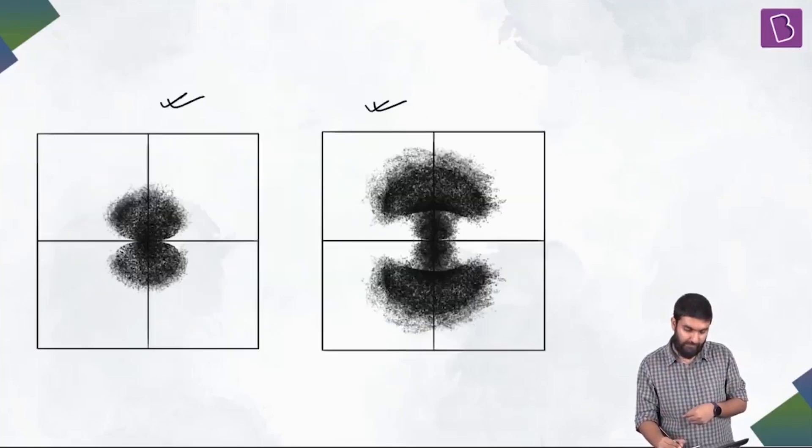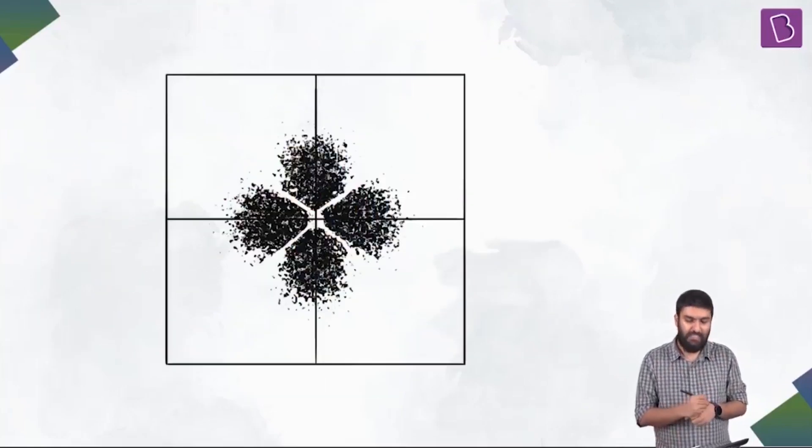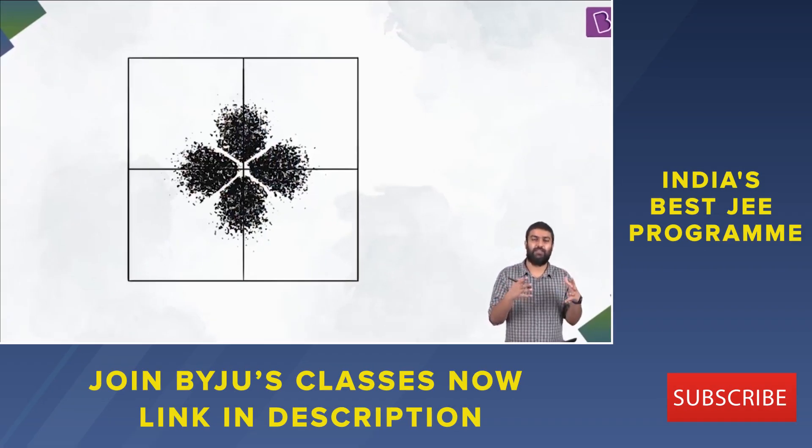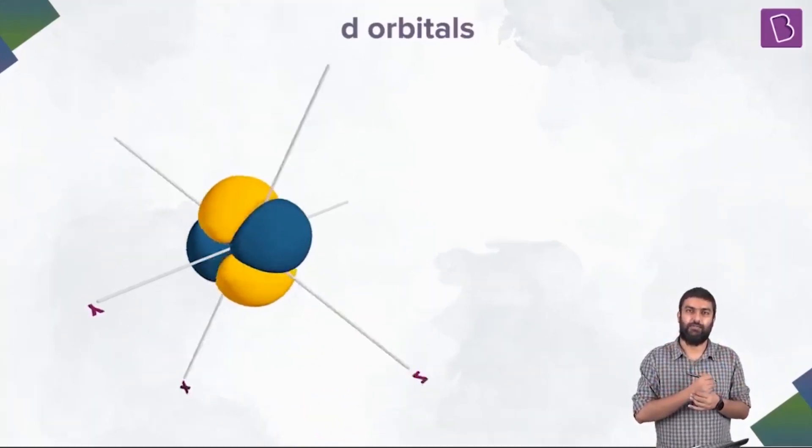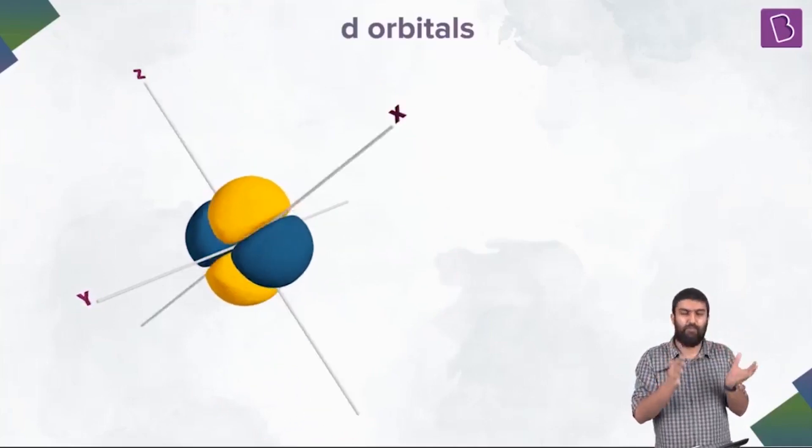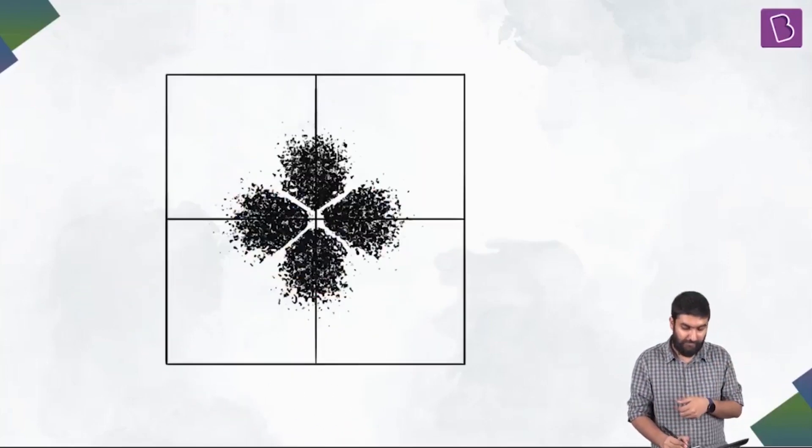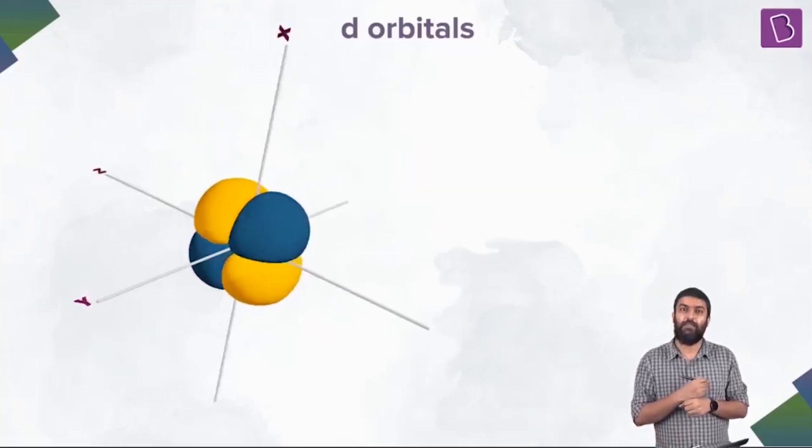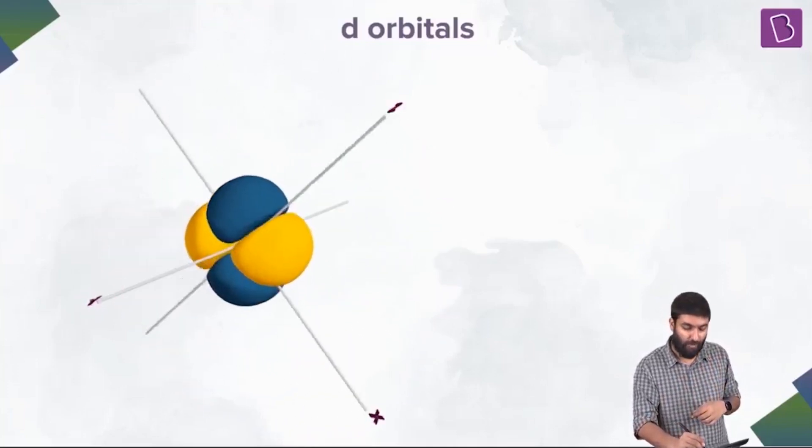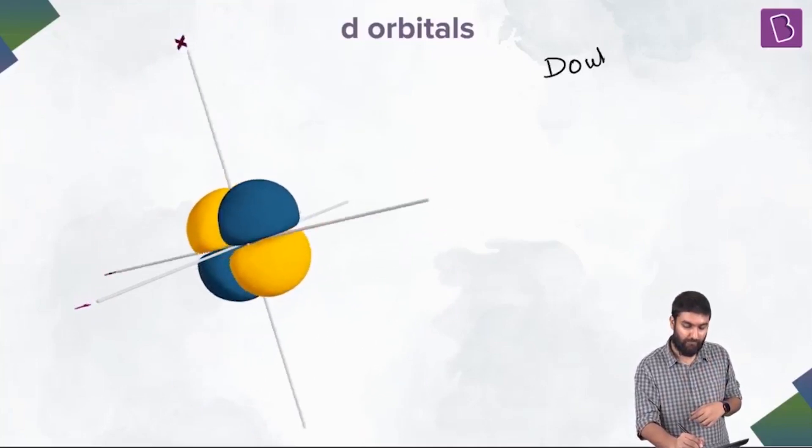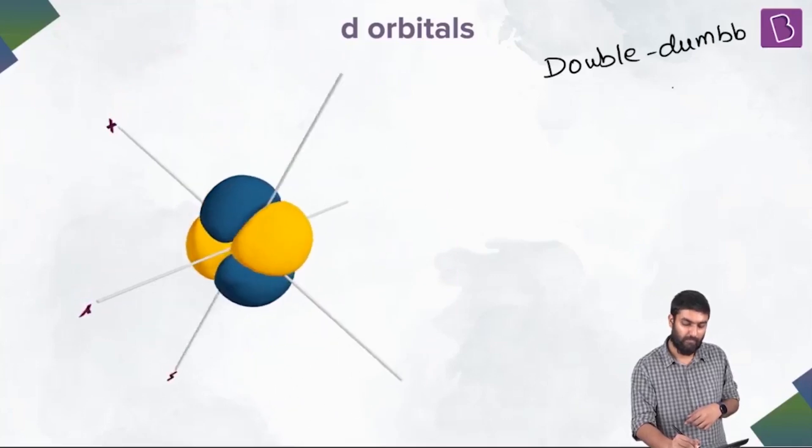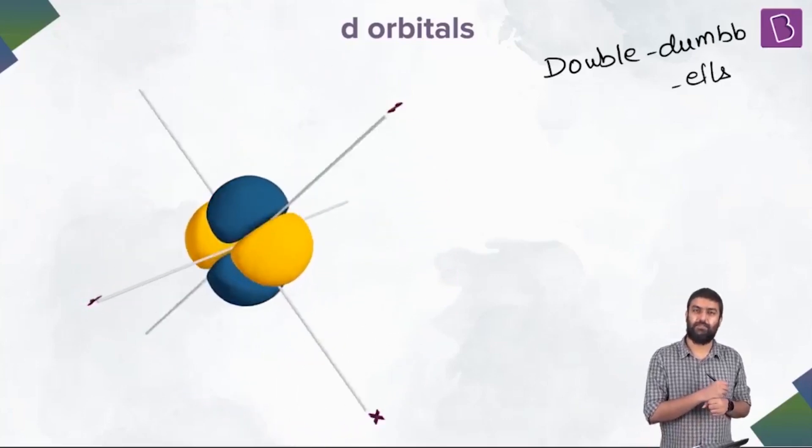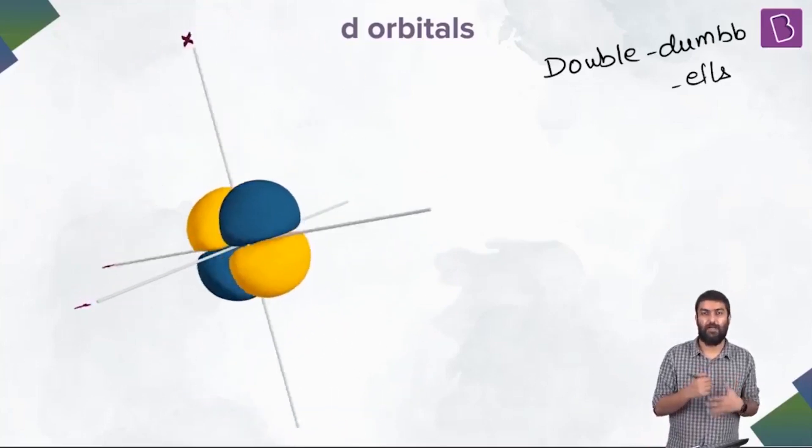Let's move forward. Let's see what else do we have here. Some of the plots came out something like this. So, based on that, we started calling them d orbitals. In 3d, they looked something like that. In 2d, they looked something like this. This was four lobes. So, we started calling them double dumbbells. Double dumbbells.